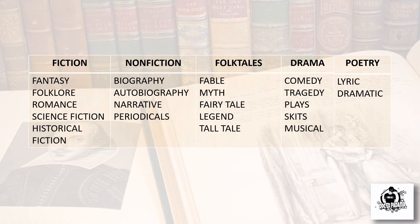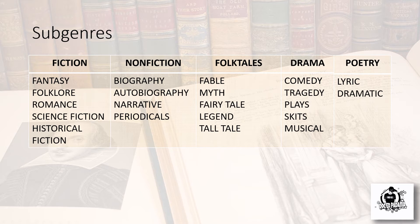These are the sub-genres of each main category. Under fiction: fantasy, folklore, romance, science fiction, and historical fiction. Under non-fiction: biography, autobiography, narrative, and periodicals. Under folktale: fable, myth, fairytale, legend, and tall tale. Under drama: comedy, tragedy, plays, skits, and musical. Under poetry: lyric and dramatic.